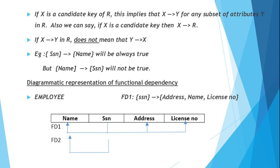This is a diagrammatic representation of functional dependency. Consider the dependency from SSN to address, name, and license number. The schema attributes — name, SSN, address, license number — are shown. The first functional dependency FD1 has SSN as the left-hand side, denoted by a line, and all attributes on the right-hand side are connected with arrowed lines. Similarly, the second functional dependency from SSN to name is represented in the same diagram. All functional dependencies in a schema are represented within the same diagram.